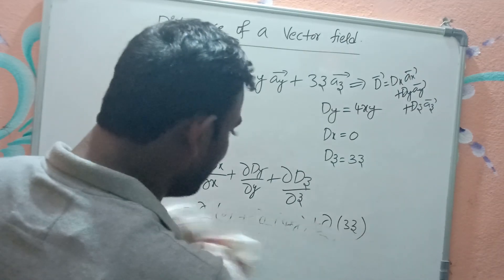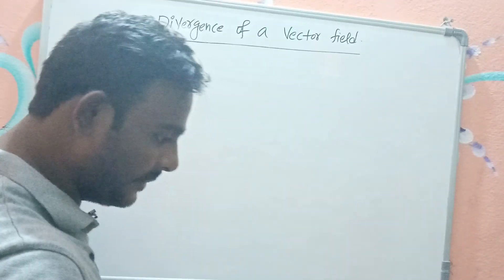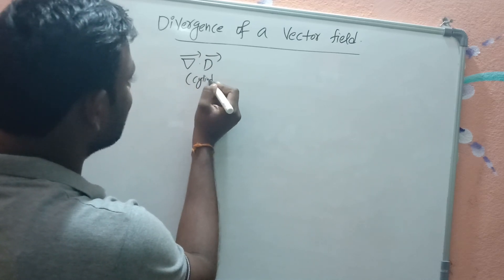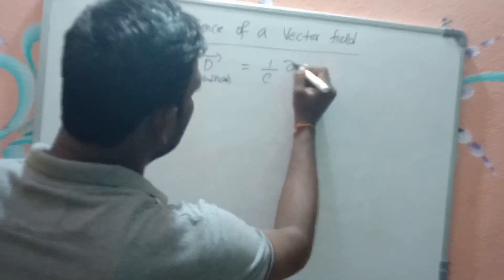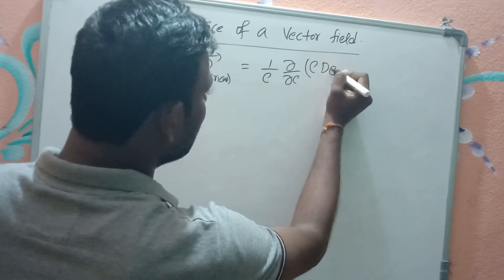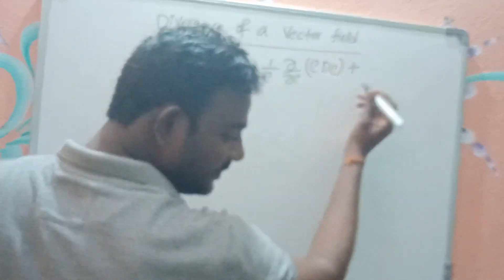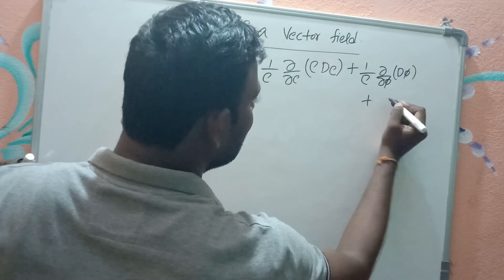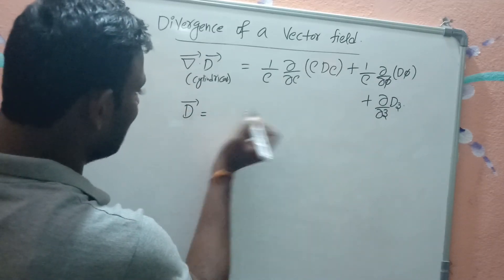If you know the formula you can find the divergence easily. Next we'll see del-bar dot D-bar in cylindrical coordinate system. The coordinates are rho, phi, z, and the divergence formula is: (1/rho)·∂(rho·D_rho)/∂rho + (1/rho)·∂D_phi/∂phi + ∂Dz/∂z.